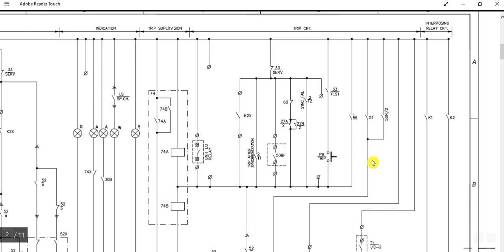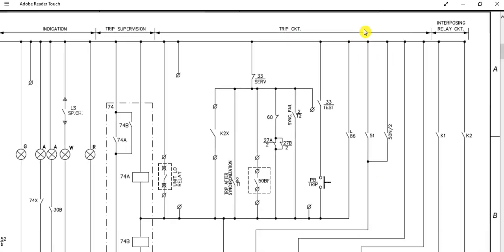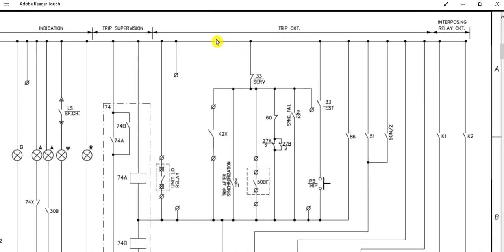In the previous video I discussed about the control kinetic circuit closing coil — that was the closing circuit. Here is the circuit breaker trip circuit, so today in this video I discuss about the trip circuit of the circuit breaker.